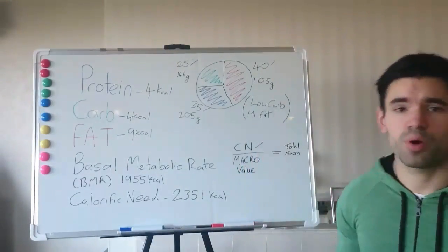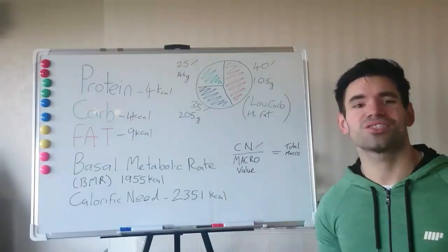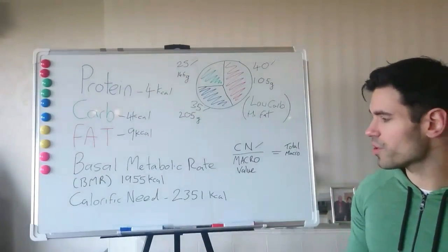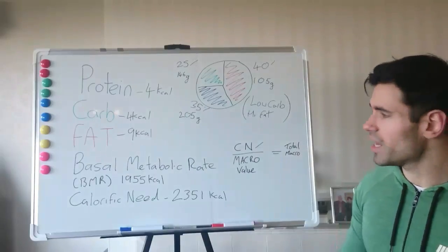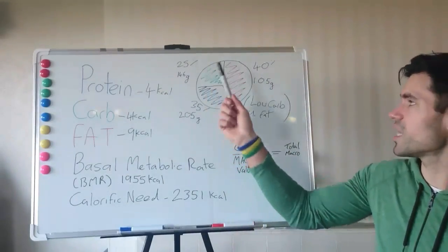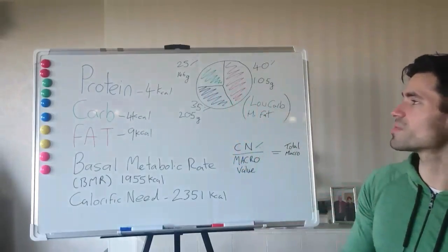If I want to put weight on, I can change it again. This would increase dramatically, it would probably go way over 3,000 calories. And I'd probably be changing the ratio, so it would probably be something like 40% carb, 40% protein, 20% fat.